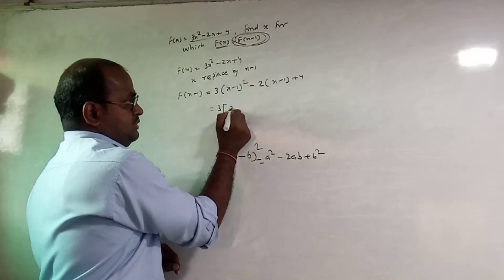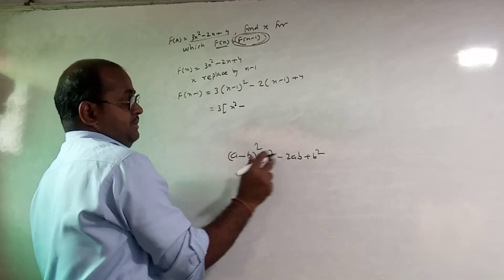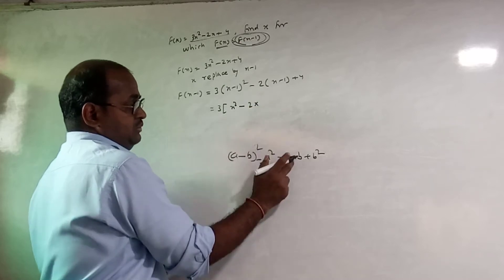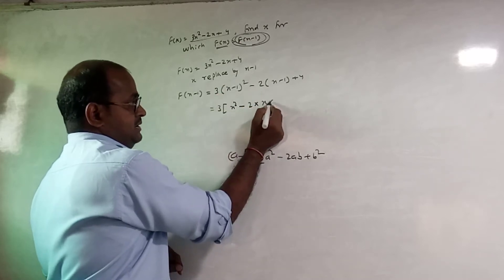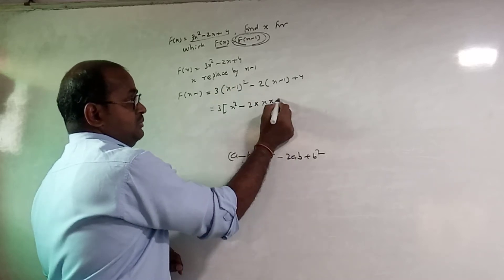a is equal to x square minus 2 into a. a means x into b means 1.